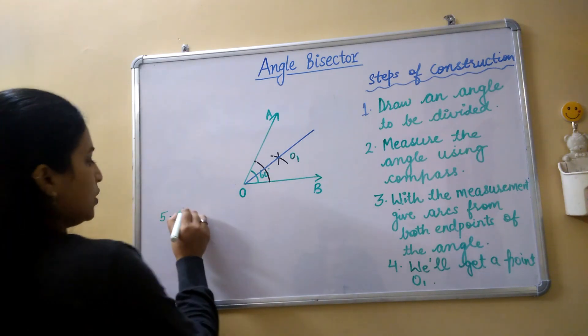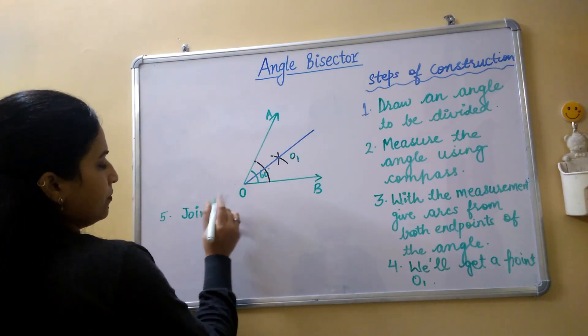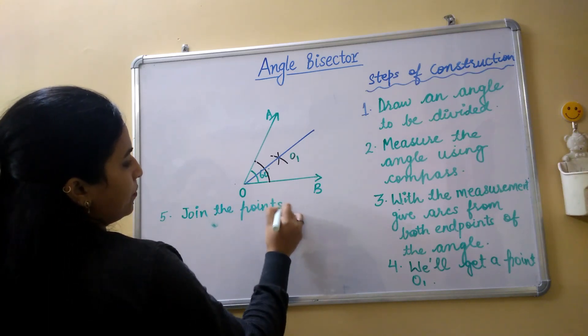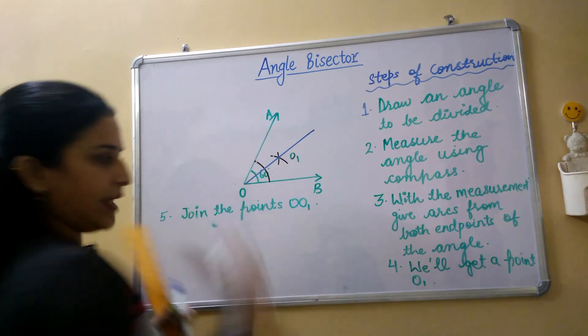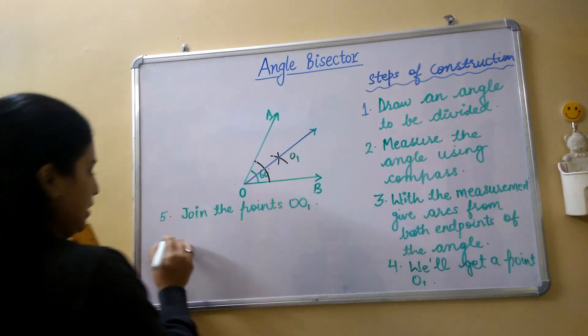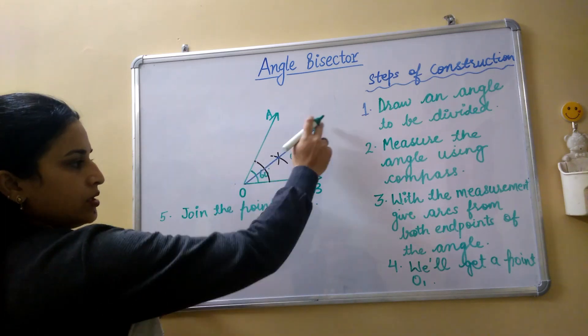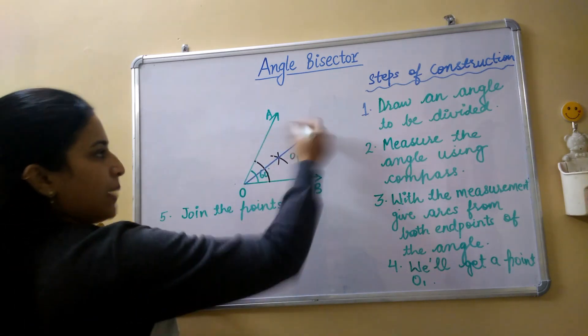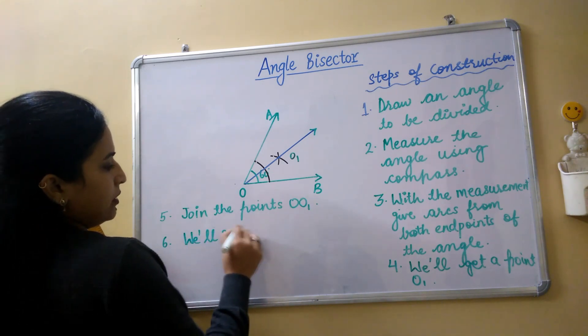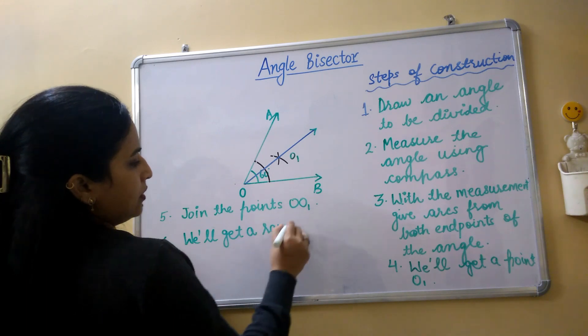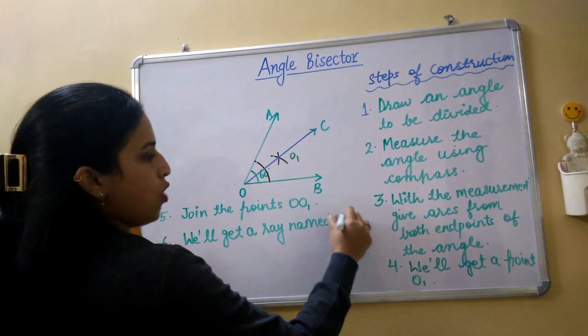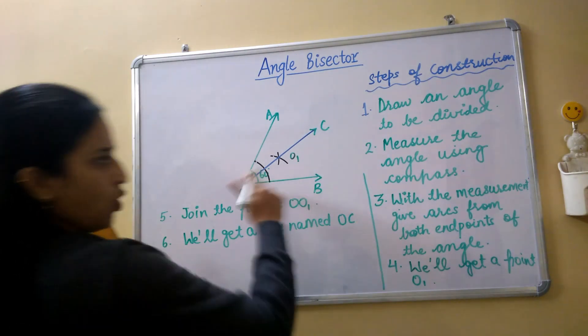The same I am going to write. The step of construction is join the points O and O1. Like this you can write. Six point, this is the ray you got. You can name the ray. We will get a ray named OC.